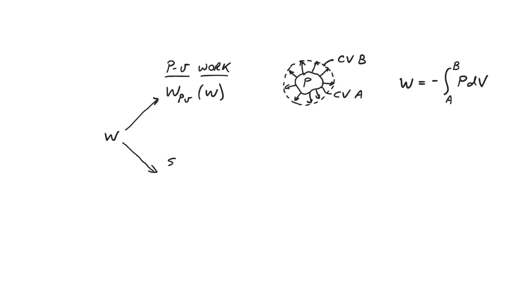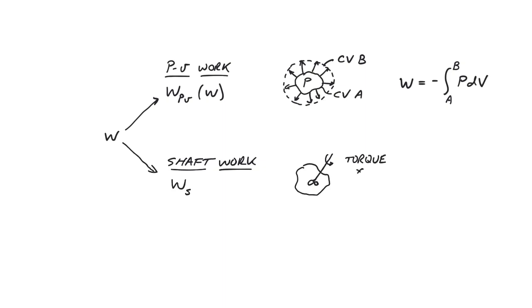The other type of work, less common for closed systems, is shaft work, usually symbolized as WS. Shaft work is so named because it's often associated with a coherent transfer of mechanical energy across the system boundary via a rotating shaft, and thus does not involve any deformation of the control volume. The term shaft work is also used as a catch-all for other types of non-PV work, such as electrical work or magnetic work.